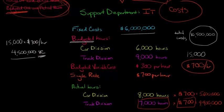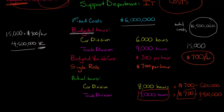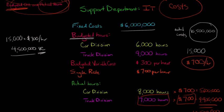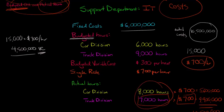Adding those together — $5.6 million plus $4.9 million — gives us $10.5 million, which is exactly the total cost we needed to allocate. We end up allocating everything with no under- or over-applied overhead, because the actual total hours of 15,000 matched our budgeted hours.